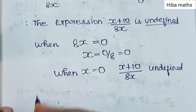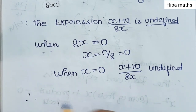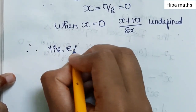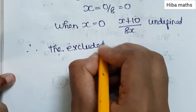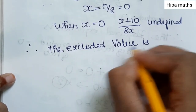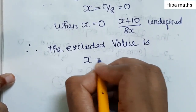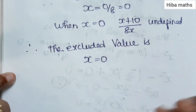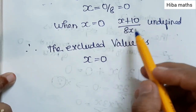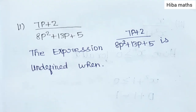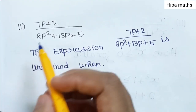Therefore the excluded value is x is equal to 0. That means if x is equal to 0, the term is undefined. So the answer is x = 0. Second expression is (7p + 3) divided by (8p² + 13p + 5).